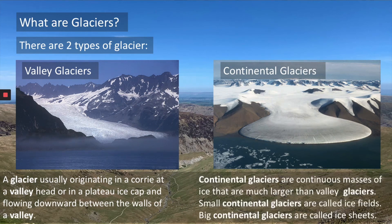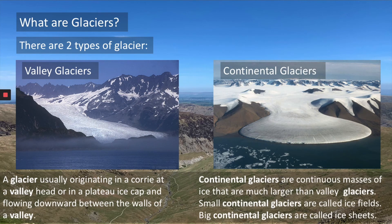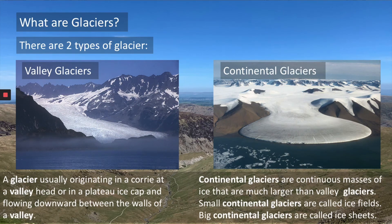A continental glacier, however, is a continuous mass of ice that is much larger than valley glaciers. Small continental glaciers are called ice fields and big continental glaciers are called ice sheets. You only find these glaciers at the north and south pole — they don't form anywhere else. However, our valley glaciers form high up in the mountains and they still form today. You can find them in the Alps, in the Rocky Mountains in America, in the Andes in South America, and the Himalayas in Central Asia.